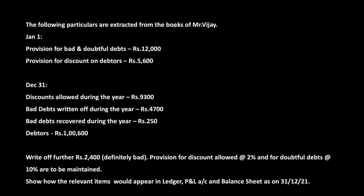The following particulars are extracted from the books of Mr. Vijay. January 1 opening balances: Provision for bad and doubtful debts is 12,000 and provision for discount on debtors is 5,600. December 31 information: Discounts allowed during the year are 9,300, bad debts written off during the year are 4,700, and bad debts recovered during the year are 250.